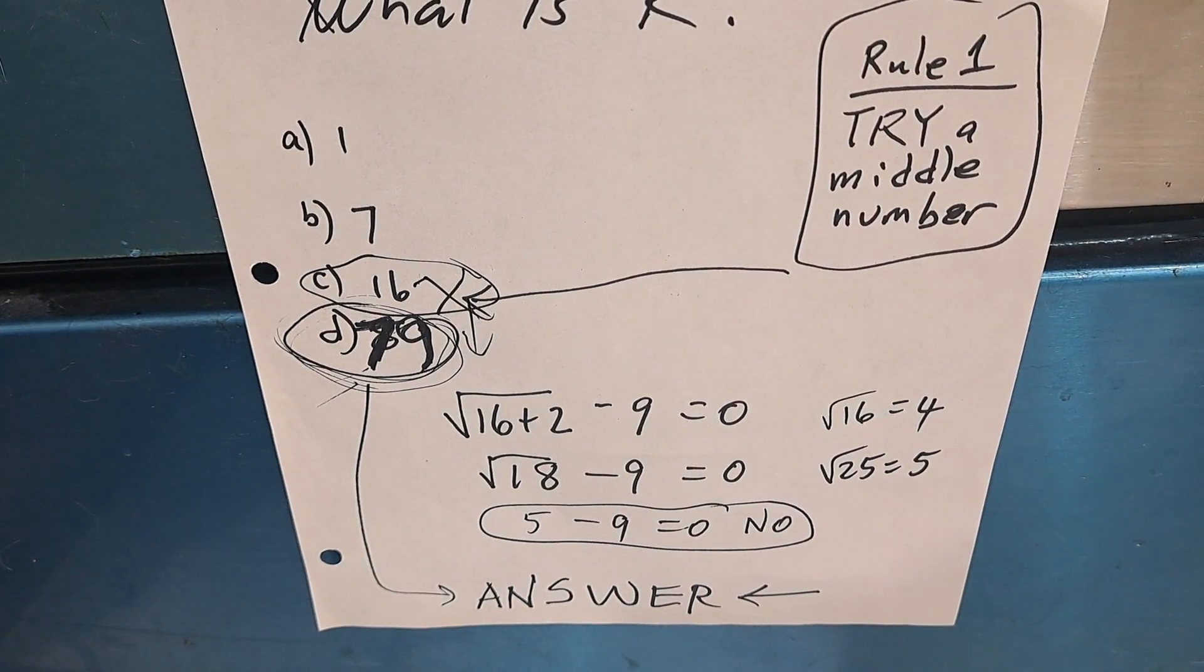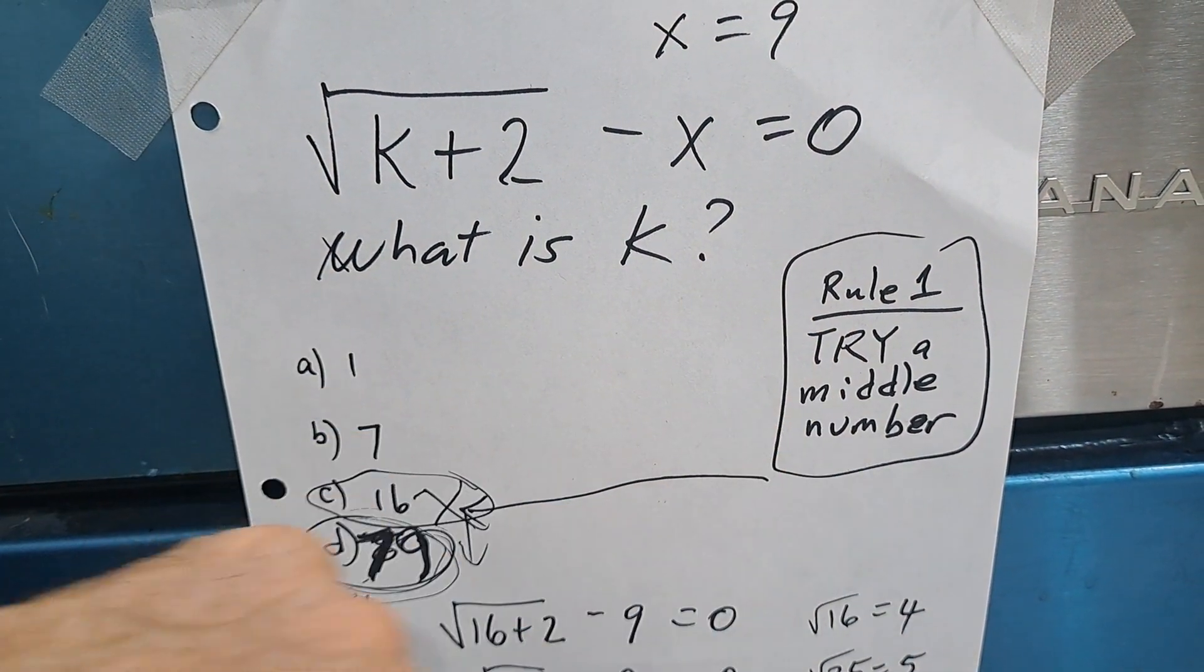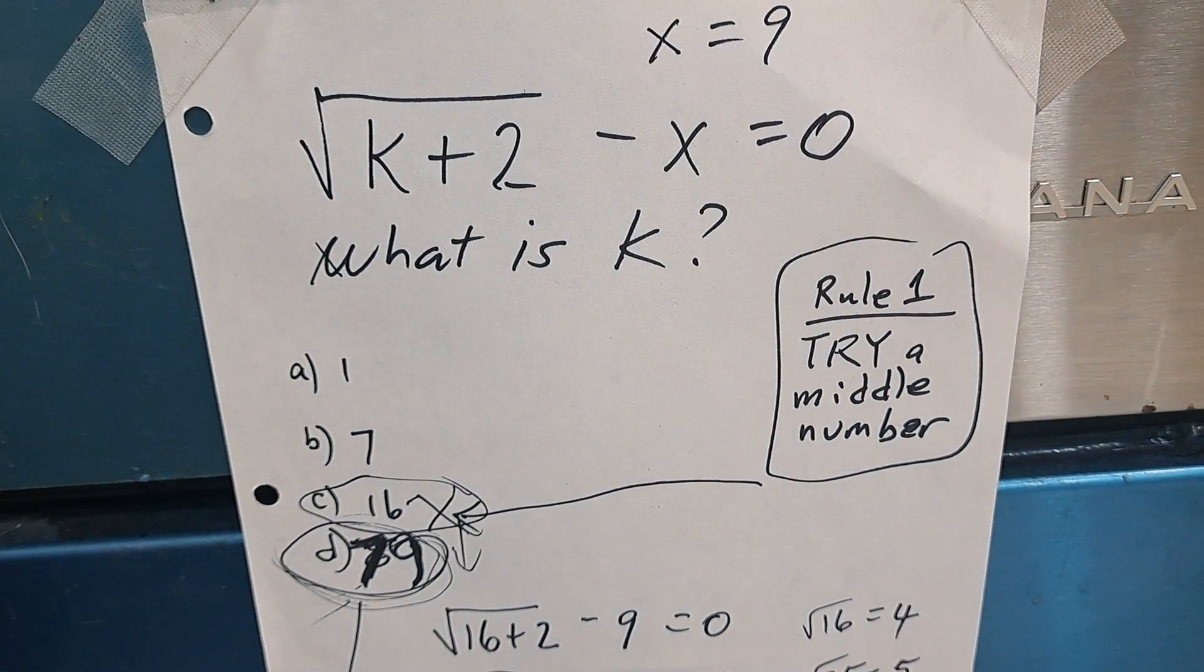So that's a trick. I like to call that rule one trick. Try a middle number, either one of these two. Thank you.